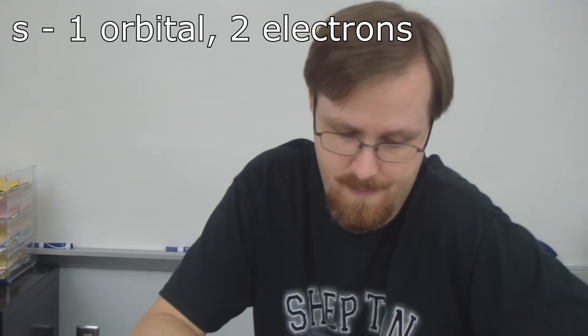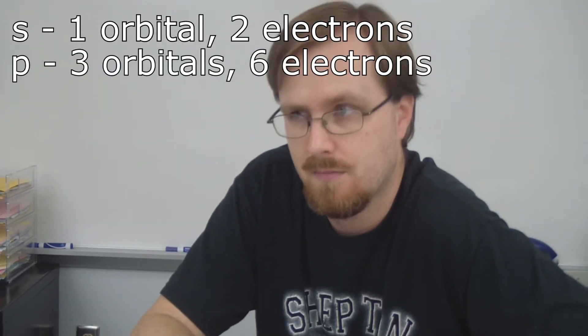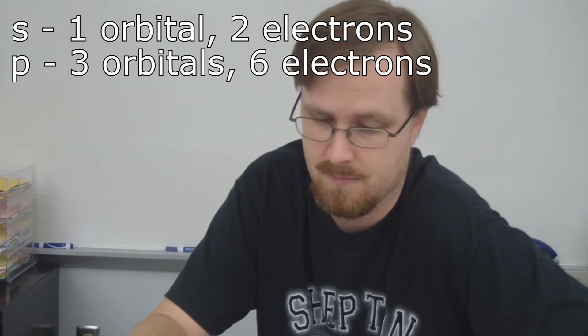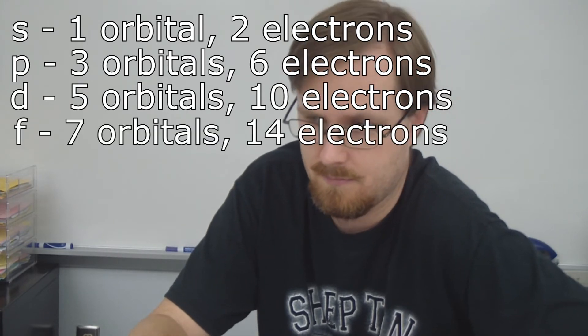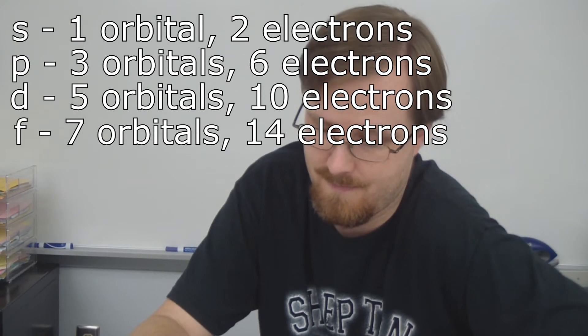The S sublevel only has one orbital for a total of two electrons. The P sublevel has three orbitals for a total of six electrons. The D sublevel has five orbitals for a total of ten electrons. And the F sublevel has seven orbitals for a total of 14 electrons.